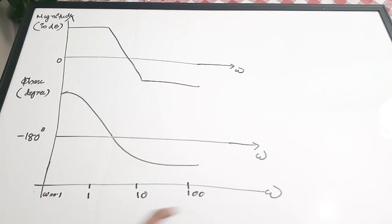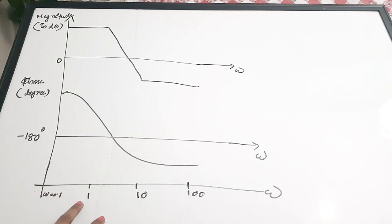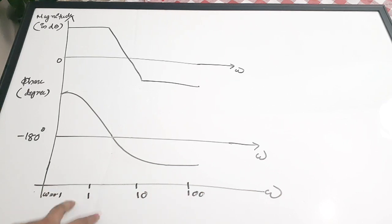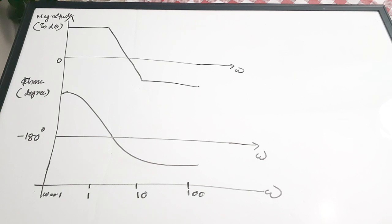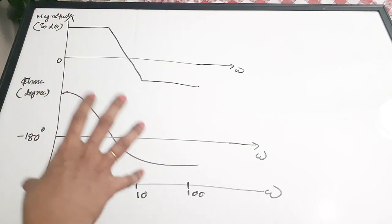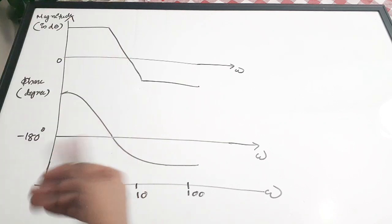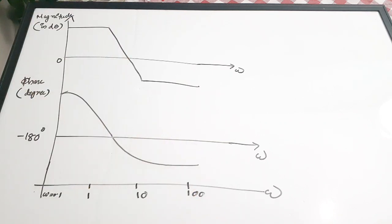Omega varies as 0.1, 1, 10, 100, and so on. In the top portion we draw the magnitude plot, and just below it we draw the phase plot. The detailed procedure has been explained in the part 2 video.